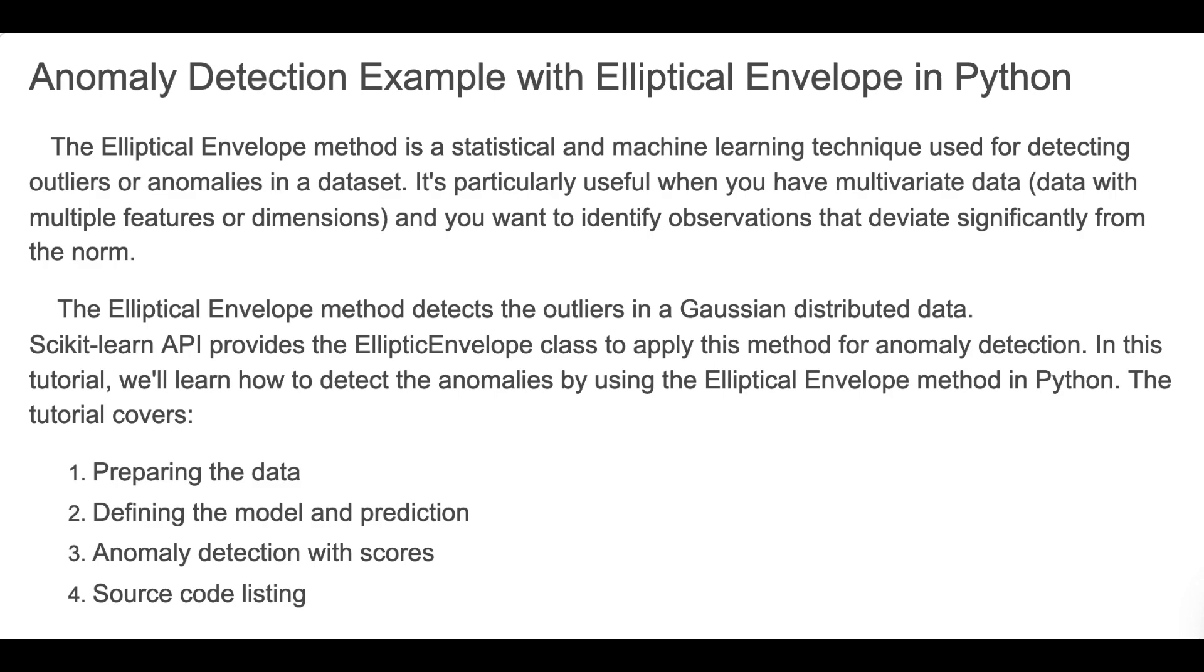Scikit-learn API provides the EllipticEnvelope class to apply this method for anomaly detection. In this tutorial, we'll learn how to detect anomalies using the Elliptic Envelope method in Python. This video covers preparing the data, defining the model and prediction, anomaly detection with scores, and the source code listing.